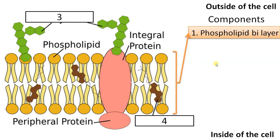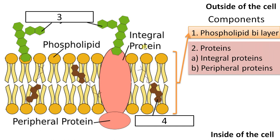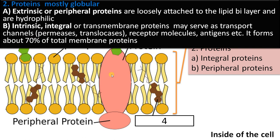The second component is the proteins. Proteins are of two types: integral proteins and peripheral proteins. Integral proteins, also called intrinsic proteins, span the membrane. You can see this is an integral protein. Often these are transport channels, permeases, translocases, etc., forming nearly 70% of total membrane proteins. To dislodge this protein is very difficult — it will alter the membrane permeability or cause complete destruction of the membrane itself.